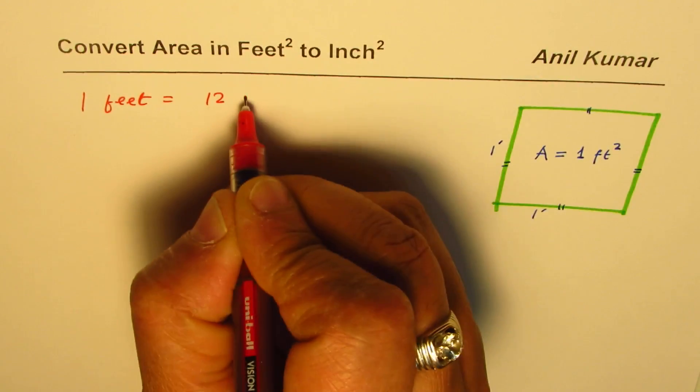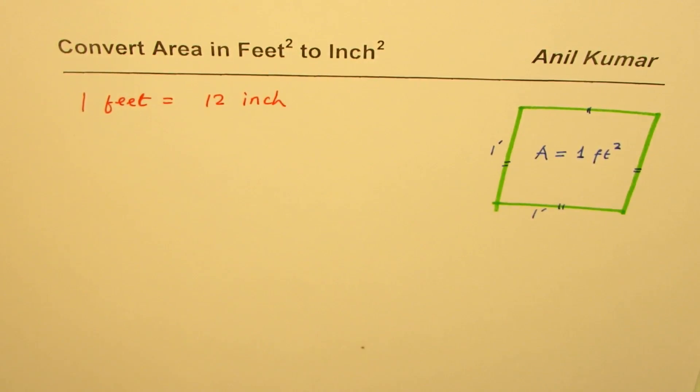The method is simple. One foot equals 12 inches, which should help you do the conversion. You can pause the video, answer the question, and then look at my solution.